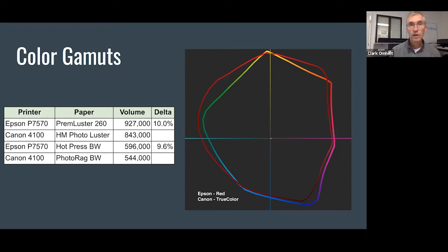That's got more of a matte finish. With both of them, the 7570 was about 10% larger in terms of color gamut, which is a substantial difference. That's a real interesting advantage of the Epson printer.